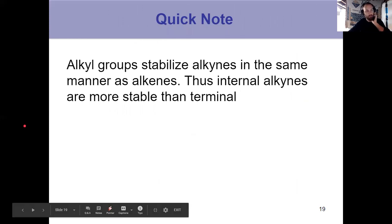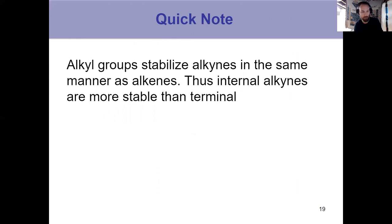So one quick note to leave off on. Alkyl groups stabilize alkynes the same way they did alkenes. Remember in chapter five, we talked about the more alkyl groups on an alkene, the more stable it is. So it's the same thing for an alkyne, but really we're just thinking about one versus two alkyl groups, unless you have the case of ethyne, which has none. An internal alkyne has an alkyl group on each carbon. So that's going to be more stable than a terminal alkyne, which just has one alkyl group, and then a hydrogen on the other.